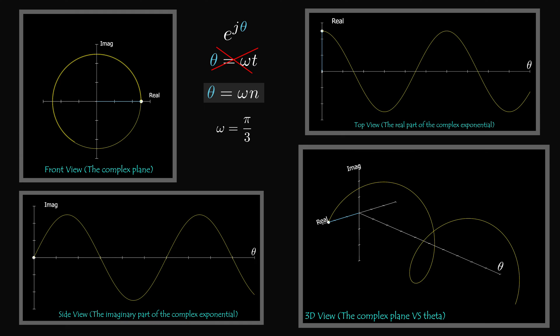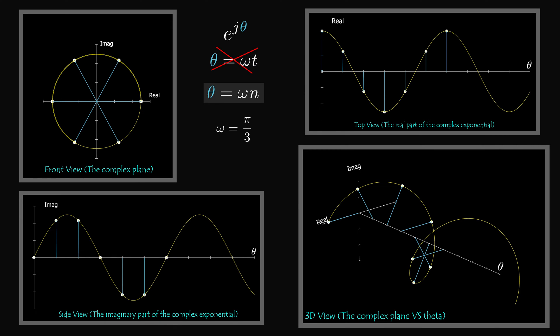If the angular frequency is equal to pi over 3, then the first point is at pi over 3 times 1 — that is, 60 degrees from the positive x axis. The second point is at pi over 3 times 2, which is 120 degrees. The third point is at 180 degrees, the fourth at 240 degrees, and so on. Each point is a complex number, or a vector with the same magnitude, rotated to a different angle in the complex plane.